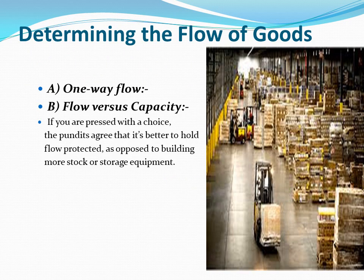Determining the flow of goods is another important principle in warehouse designing. A skillful designer typically applies two immutable laws of flow: one-way flow, and flow versus capacity. The best warehouse operations adhere to one-way flow — whether straight, clockwise, counterclockwise, up or down, the flow must be one-way only. In flow versus capacity, free movement has priority over storage capacity. If pressed with a choice, it is better to protect flow rather than build more stock or storage equipment, because long after construction is complete, a team must work efficiently and safely in the warehouse year after year.